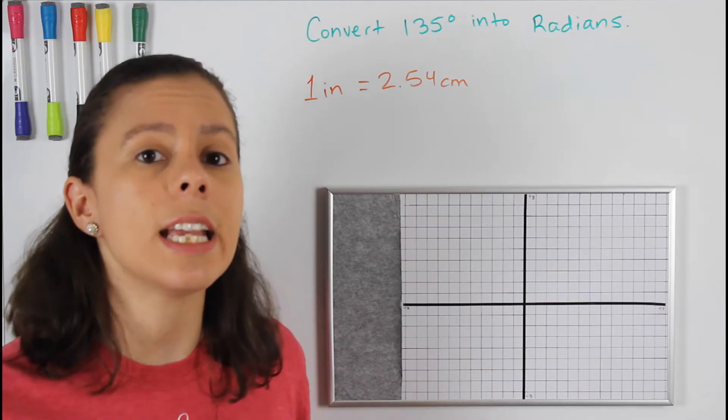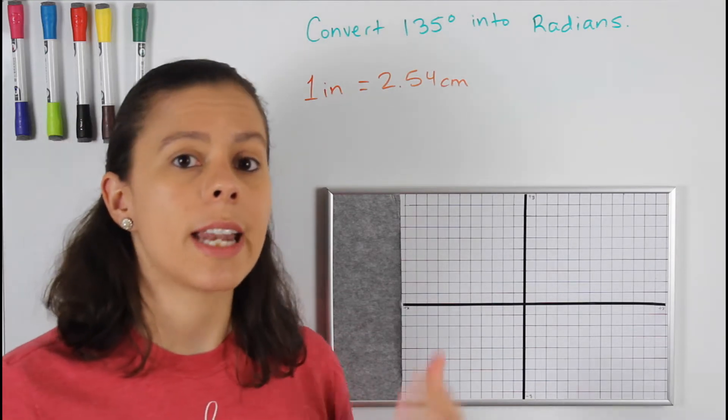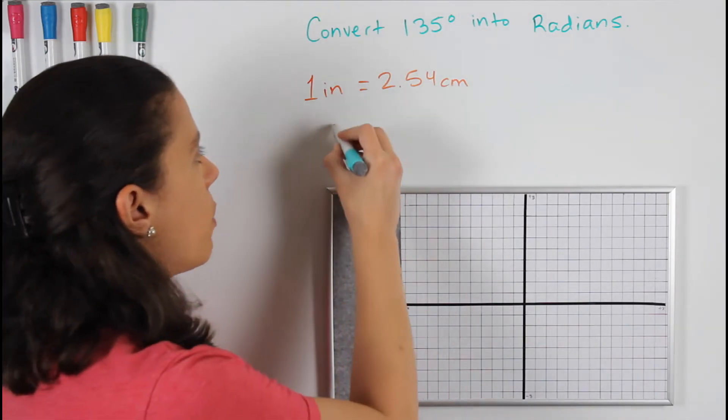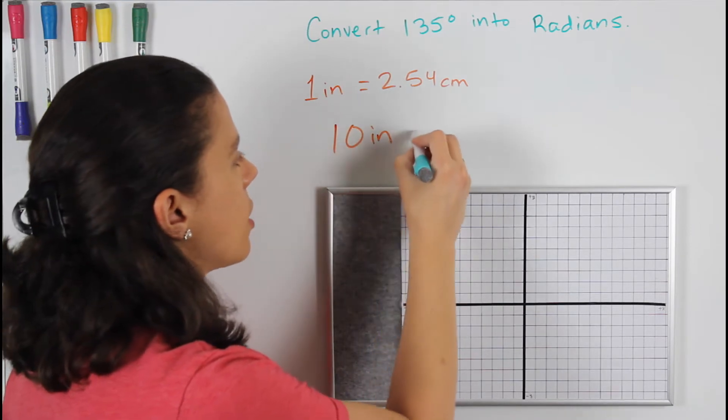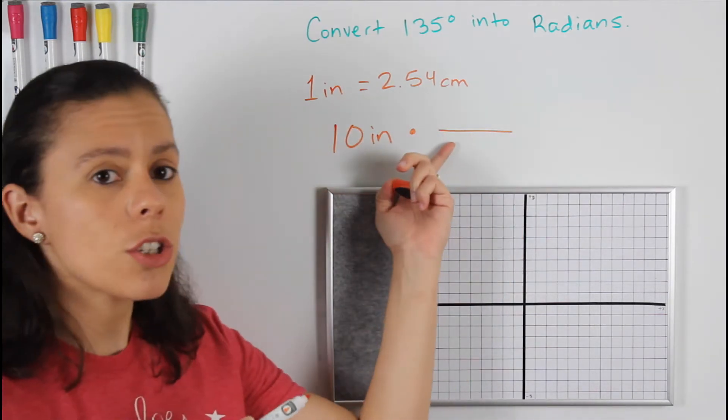For example, if I have 10 inches, how much is that in centimeters? So what I would do is I have 10 inches, and I multiply that by—I put the inches at the bottom, so it would be one inch and 2.54 centimeters.